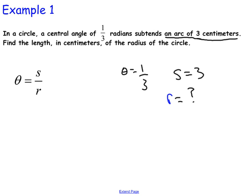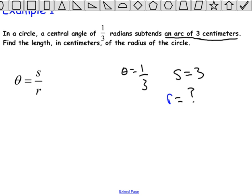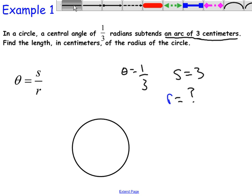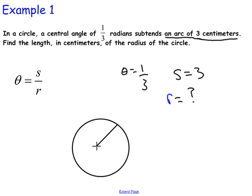And let me just, before I plug it into the formula, let me actually sketch this scenario out for those of you that are visual. So we have a circle and we have a central angle of one-third radians. This is obviously not going to be drawn to scale.